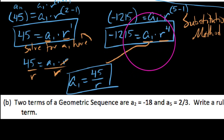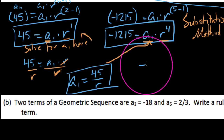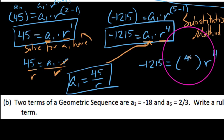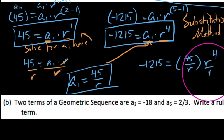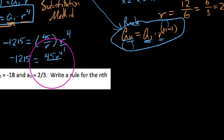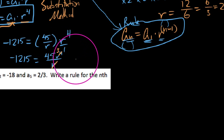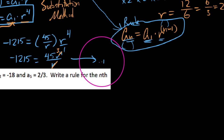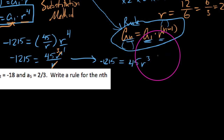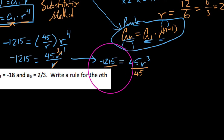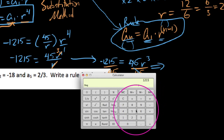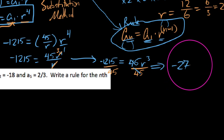Now that I know a1, we can plug it into the second equation. We have negative 1215 equals a1 times r to the fourth. Substituting, we get negative 1215 equals 45 over r, times r to the fourth. That r in the denominator cancels with one of the r's on top and leaves behind r cubed. So when it all comes down, we get: negative 1215 equals 45 r cubed.